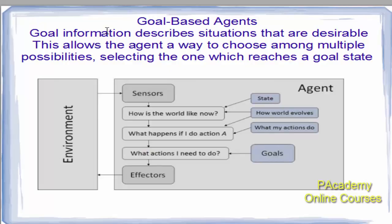Goal-based agents expand further on model-based agents by using goal information. Goal information describes situations that are desirable, allowing the agent to choose among multiple possibilities and select the one which reaches the goal state. They use sensors to perceive the current state, use information stored from past history, and evaluate what happens if an action is done — selecting actions that achieve the defined goals.